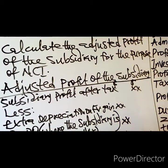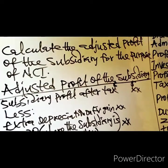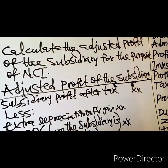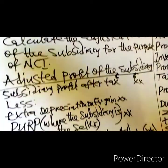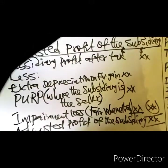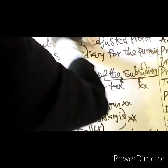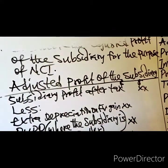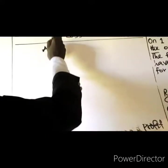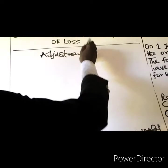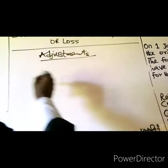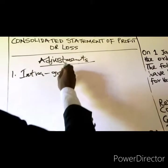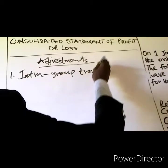That covers the procedures for preparing the consolidated statement of profit or loss. I now want to explain the treatment of certain items in the consolidated statement of profit or loss. The first item is intra-group trading — adjustment number one in the consolidated statement.